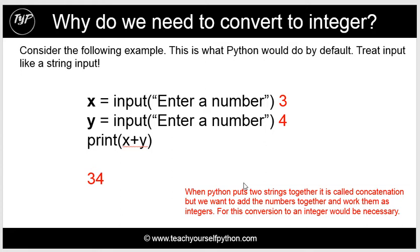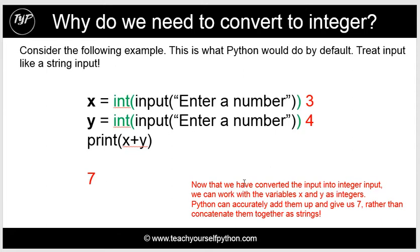Now why do you need to convert to an integer? Well, if you didn't, as I'll show you in a minute, if you asked the user for two numbers, three and four, and you wanted to print the sum of the numbers, in other words add the numbers together, it would give you 34 instead of 7. That's because it's treating the input as a string. However, if you converted these numbers, the user input, to an integer, it would correctly work with them as integers and give you a 7.